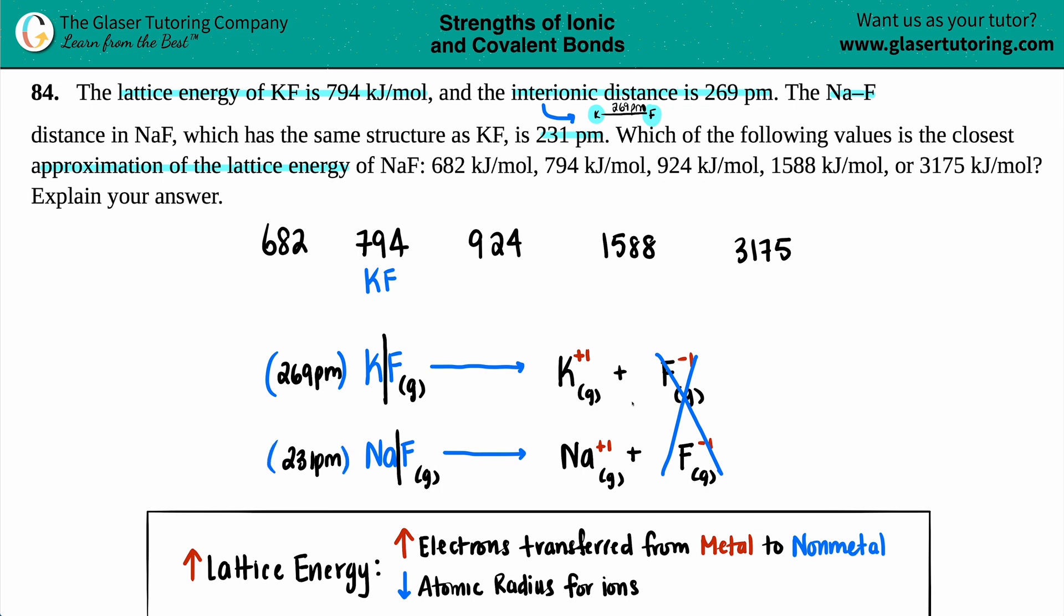All right. So now we do notice that there is a difference in the distance, right? For potassium, the distance is a little bit longer. So in this case, it's a larger ionic compound. 231 is a little bit smaller.